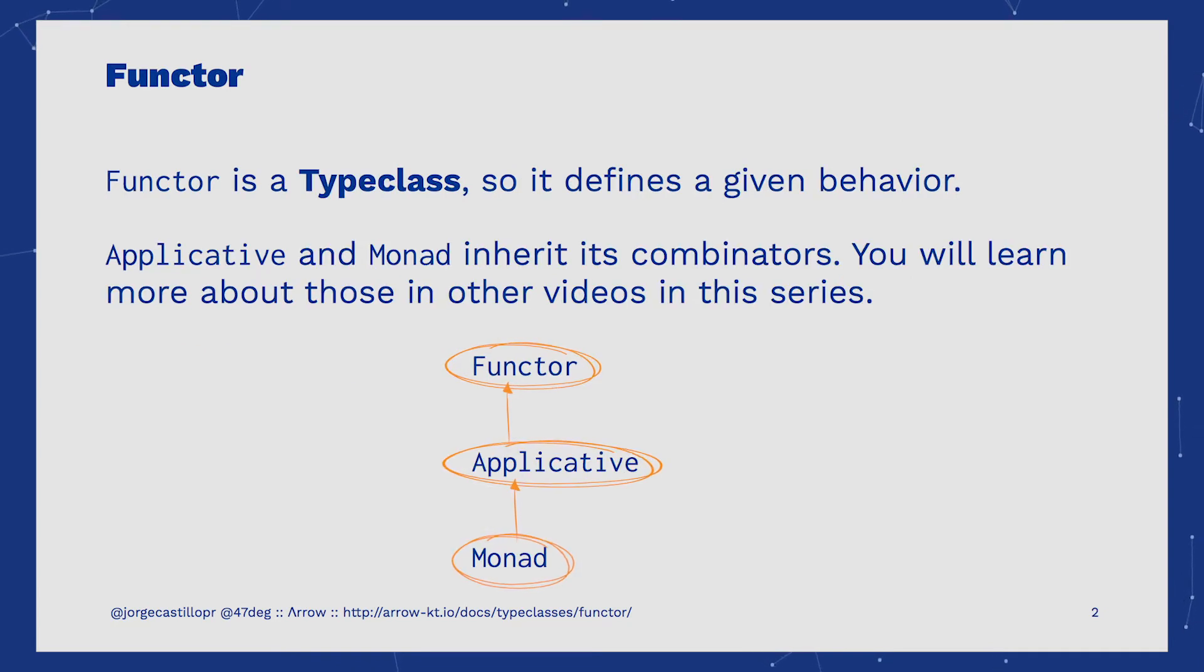Functor is defined as a type class. In pure functional programming, type classes define behaviors. We'll know about which behavior is encoded in the Functor in upcoming slides. Other very well-known type classes are Applicative and Monad, and this is how they are related to each other. We'll talk about those in other Arrow videos.